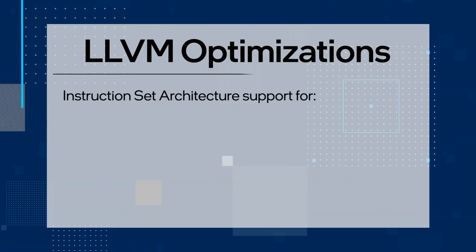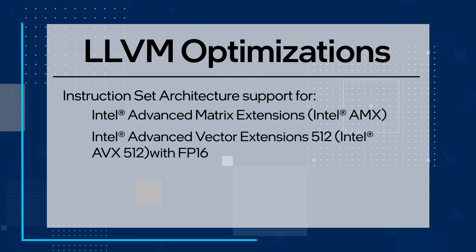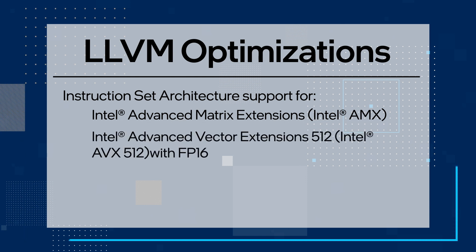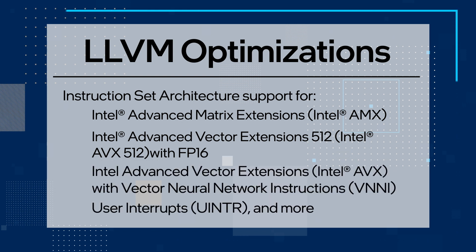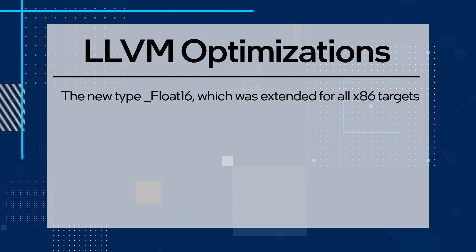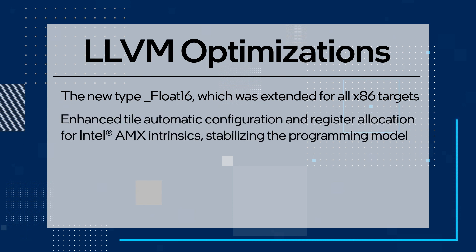It consists of instruction set architecture support for Intel Advanced Matrix Extensions, Intel Advanced Vector Extensions 5.12 with floating point 16, Intel Advanced Vector Extensions with Vector Neural Network Instructions, user interrupts, and more. The new type float16 was extended for all x86 targets. Enhanced tile automatic configuration and register allocation for Intel AMX Intrinsics, stabilizing the programming model.